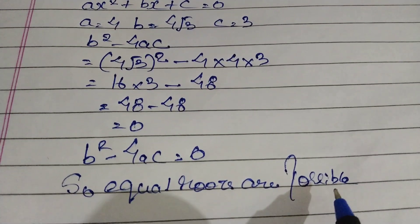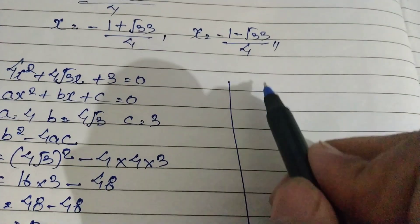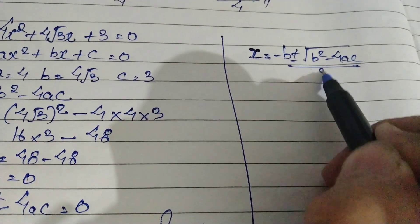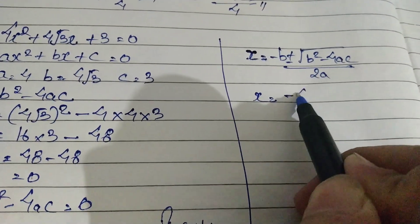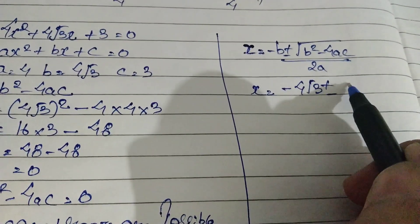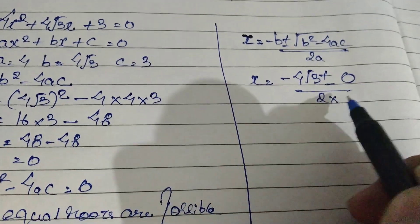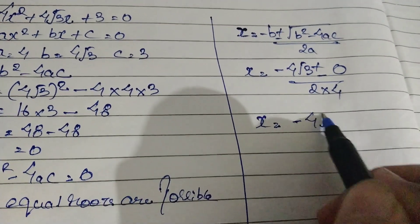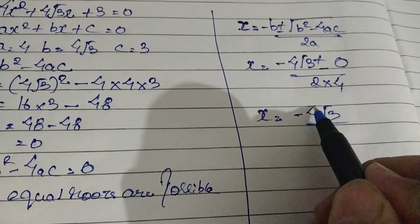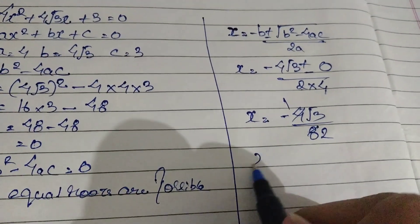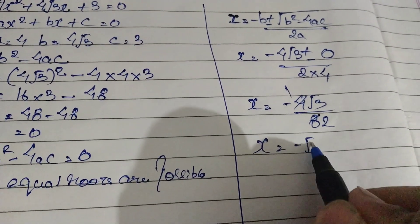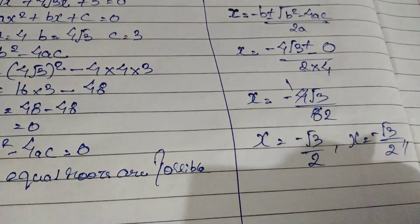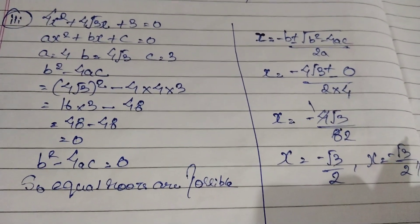Equal roots are possible. Using the formula x = (−b ± √(b²−4ac)) / 2a: x equals minus 4√3 plus minus root of 0, divided by 2 into 4, which is 8. Since the root term is 0, we write only minus 4√3 divided by 8. Simplifying, 4 cancels to give x equals minus √3 divided by 2. So both roots are x = −√3/2.